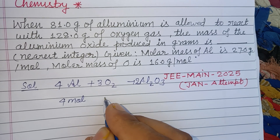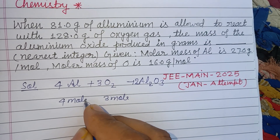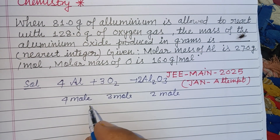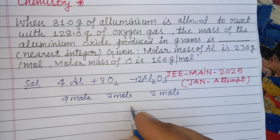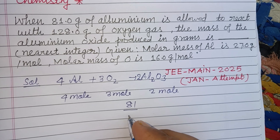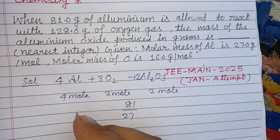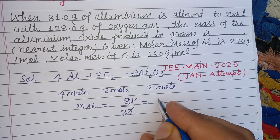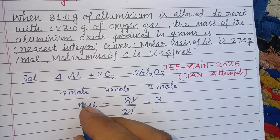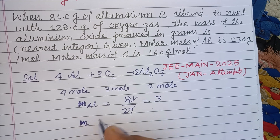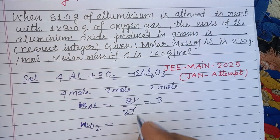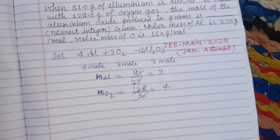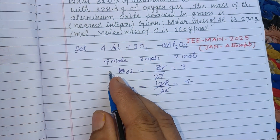From the balanced equation, 4 moles of aluminium react with 3 moles of oxygen to form 2 moles of aluminium oxide. The number of moles of aluminium given is 81 ÷ 27 = 3 moles, and the number of moles of oxygen is 128 ÷ 32 = 4 moles.